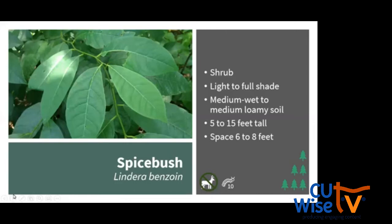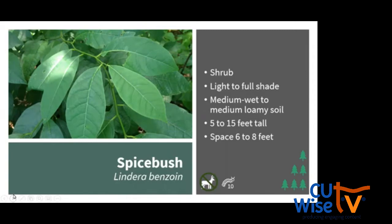Spicebush is a shrub that likes light to full shade and can grow 6 to 8 feet tall. It likes medium to medium-wet loamy soil. This is our first deer-resistant plant — because of the odor of its leaves, deer generally don't prefer it, though they may occasionally browse it. It has beautiful delicate yellow flowers in spring, its leaves turn yellow in fall, and it produces bright red berries. It supports 10 species of caterpillars. If you've never crushed a spicebush leaf, it has a very pleasant aroma.